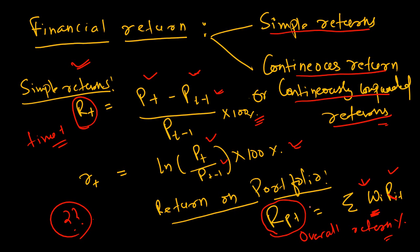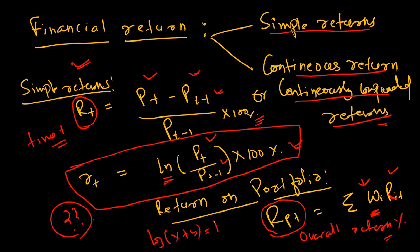Now, this formula will not apply for the continuous one. The continuous one is not the same because there is logarithm. If there is no logarithm then you can simply add it out, but when there is logarithm, log of x plus y is not log of x plus log of y. For that you need to first compute the return and then take the logarithm of that.